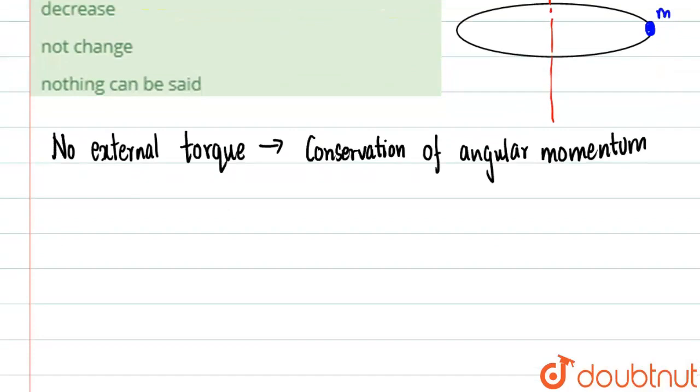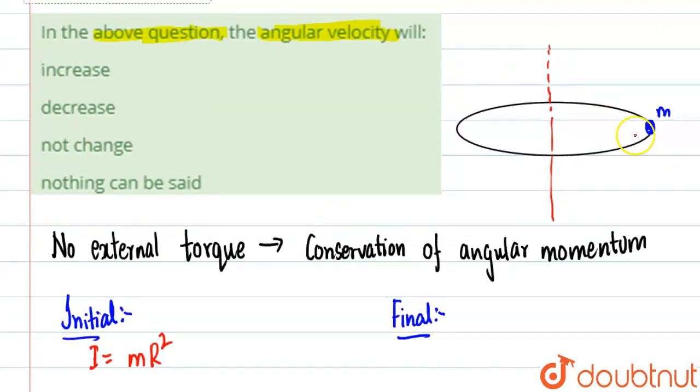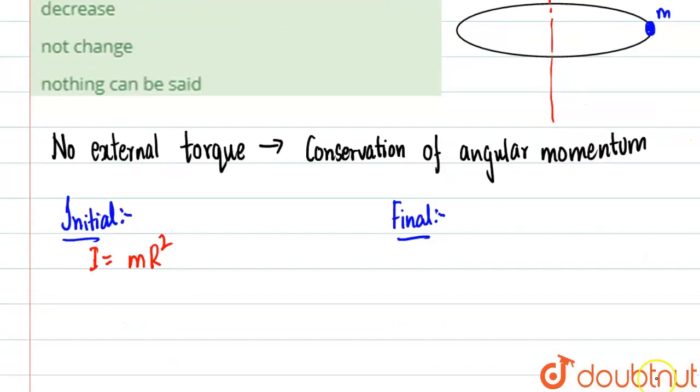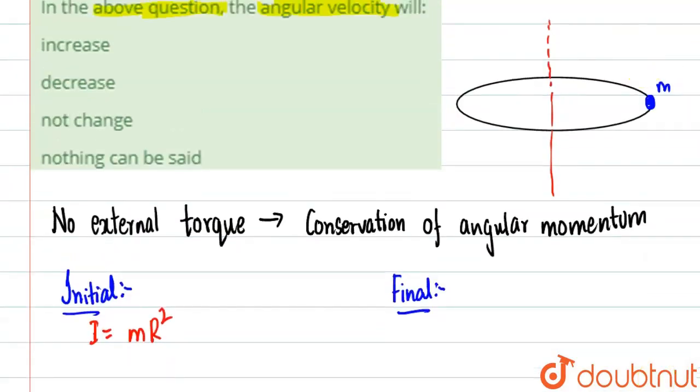What was the moment of inertia? I'll write two cases: initial and final. For the initial case, the moment of inertia I was equal to M·R², where R is the radius. Let's suppose this distance is R.